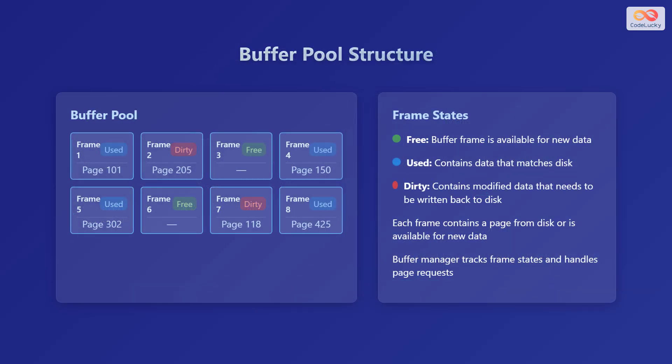Let's take a look at the structure of a buffer pool. The buffer pool is essentially a collection of buffer frames within the main memory. You can see in the diagram that the buffer pool is made up of multiple frames. Each frame can hold a page of data, read from the disk storage. A frame can be in one of three states: free, used, or dirty.